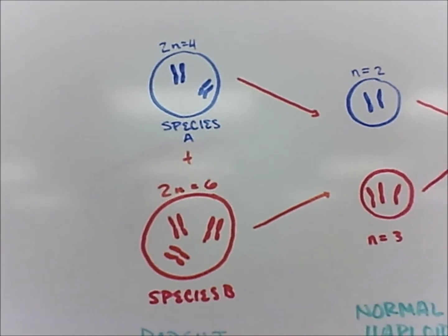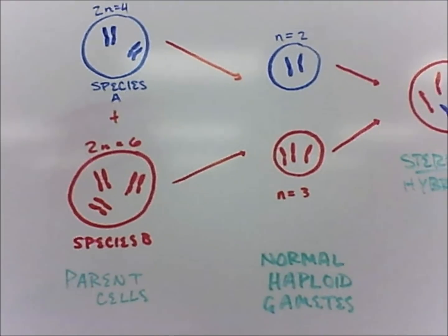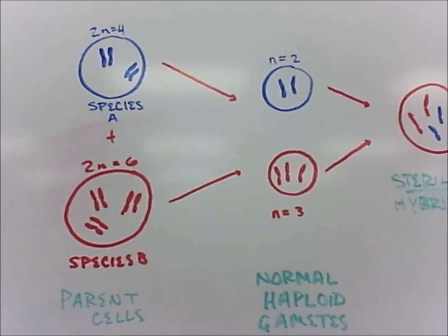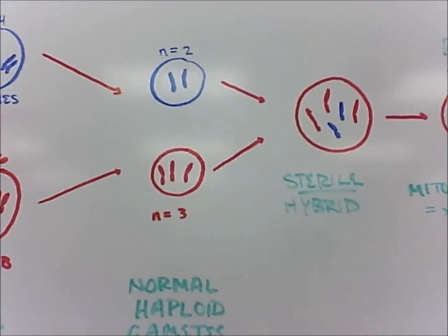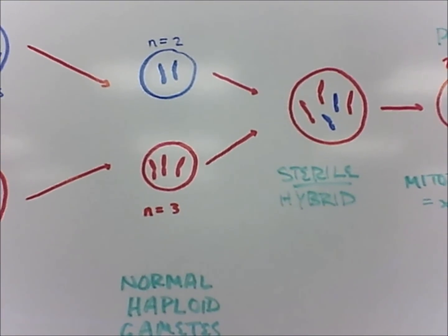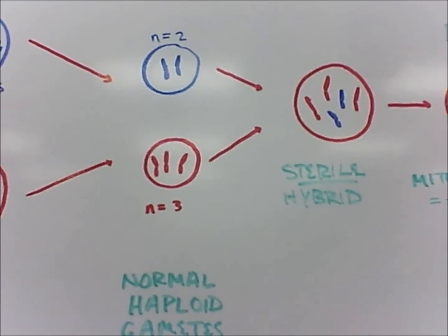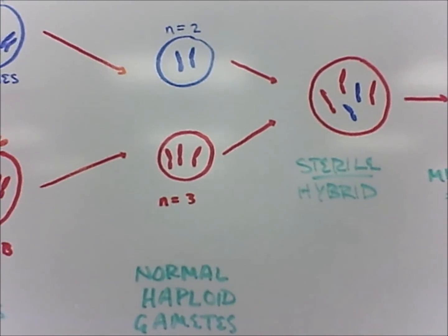When their normal haploid gametes combine, the unpaired chromosomes cause the hybrid to be infertile. The unpaired chromosomes cause abnormal meiosis, and the gametes of the hybrid are not produced correctly or at all.